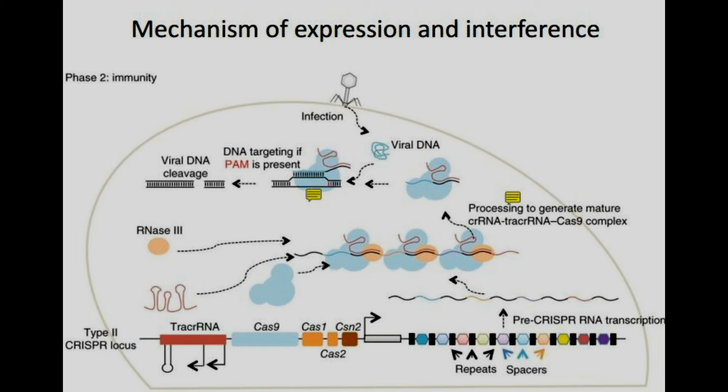A CRISPR repeat never has a PAM for itself. In very simple terms, a guide RNA is able to take the nuclease — the scissors of the DNA — to the exact point where we want to cleave off the DNA sequence. This allows us to make a cut or nick at the point of our interest and insert, modify, or delete whatever we'd like at that point.